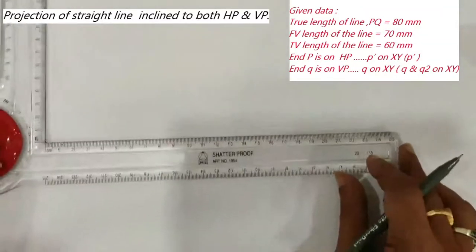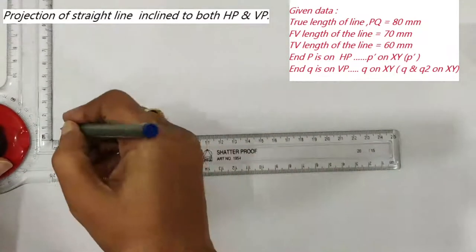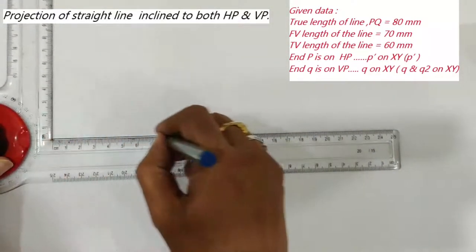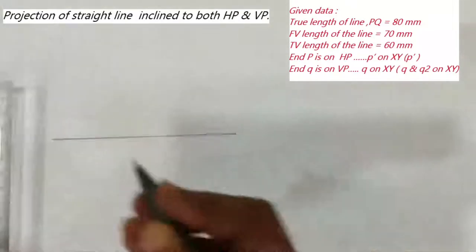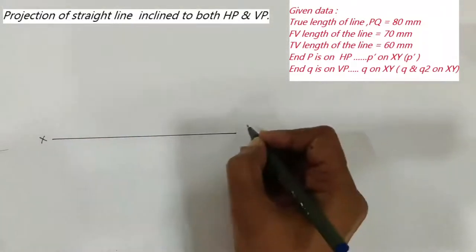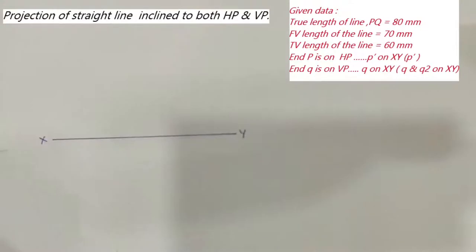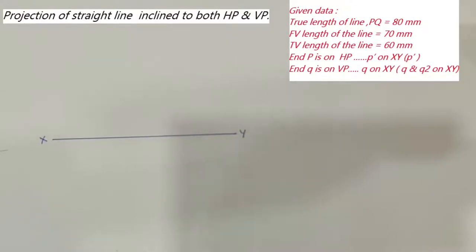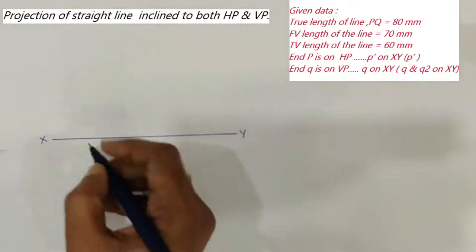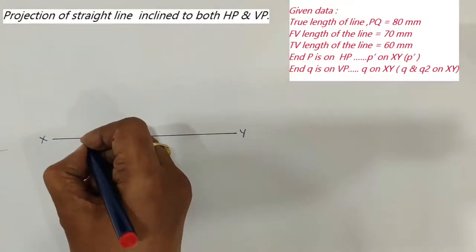As a first step, draw the XY line. After drawing the XY line, it is mentioned in the problem that one end of the line, P, is on the HP. So its front view falls on the XY line — its front view is P', and P' falls on the XY line. Then locate P' on the XY line.